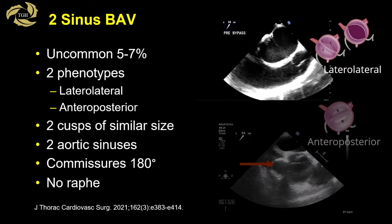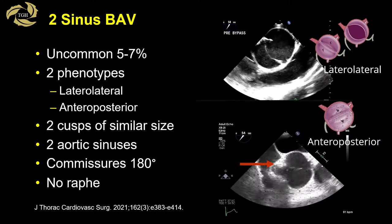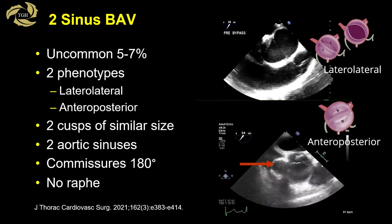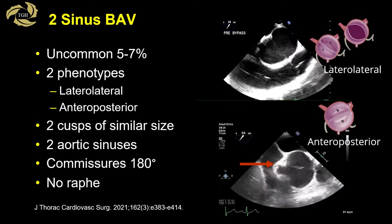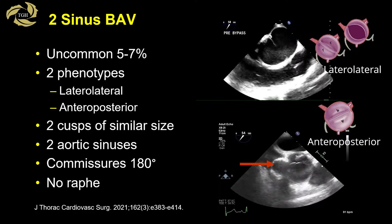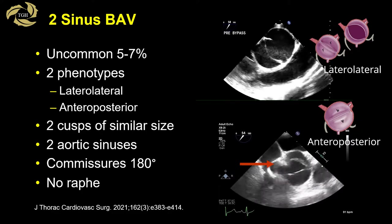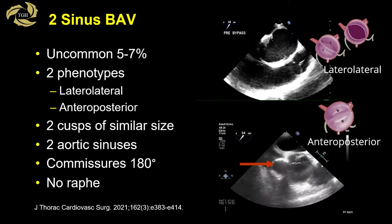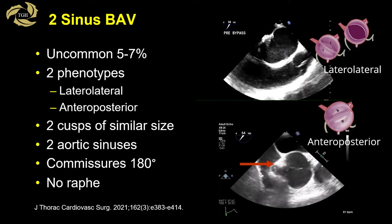The two-sinus bicuspid valve is uncommon, presenting in 5 to 7% of cases. The valve comprises two similarly-sized cusps with only two aortic sinuses. The commissures are positioned at 180 degrees and no raphae is present. In the TEE example shown, the red arrow is pointing to a sinus of valsalva aneurysm of the non-coronary sinus.